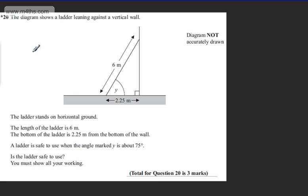This is question number 20, an asterisk question carrying 3 marks. The diagram shows a ladder leaning against a vertical wall. The ladder stands on horizontal ground. The length of the ladder is 6 metres. The bottom of the ladder is 2.25 metres from the bottom of the wall. A ladder is safe to use when the angle marked is about 75 degrees. The question asks: is the ladder safe to use? You must show all your working.